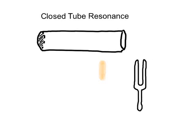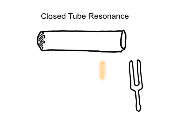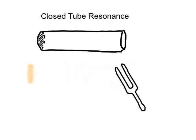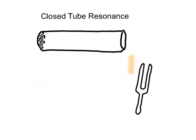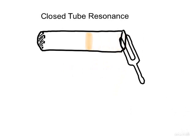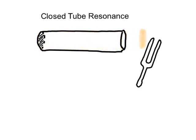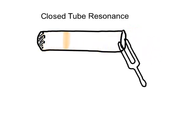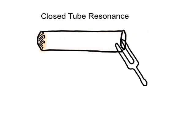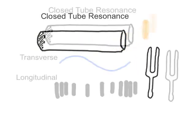First, we've got to understand what's happening with a tuning fork. When it vibrates, it's shaking back and forth, kind of like a pendulum. So it's going to be sending compressions of air in every direction. When it's in front of a tube, it's going to send a compression down the tube. That compression is then going to reflect back, and on its way out, if it happens to be coming out at the same exact time that the tuning fork is on its backswing, then it's going to reinforce the natural frequency of the tuning fork.